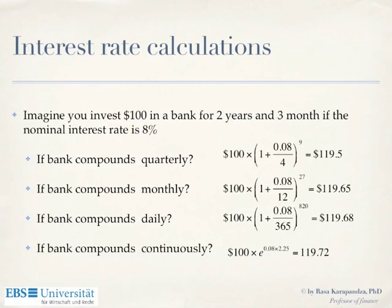Let's remind ourselves how we calculate interest. Imagine you have $100 in a bank for two years and three months, and the nominal interest rate is 8%. To tell how much money you will get, you need to know how frequently your bank is doing the compounding. If the bank compounds quarterly, the quarterly rate will be 8% divided by 4, and we put everything to the power of 9 — because two years and three months is nine quarters.